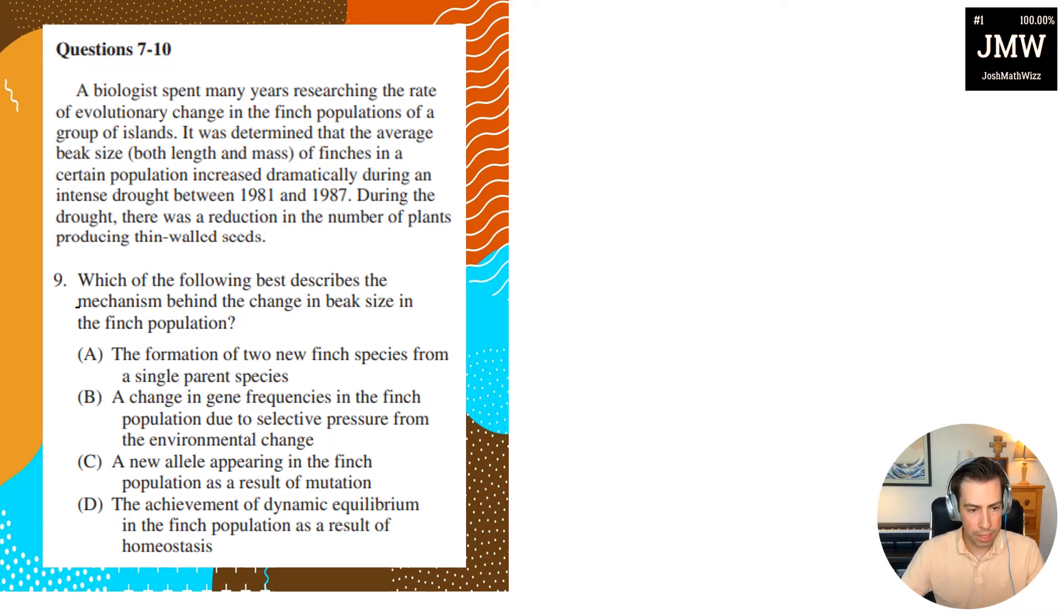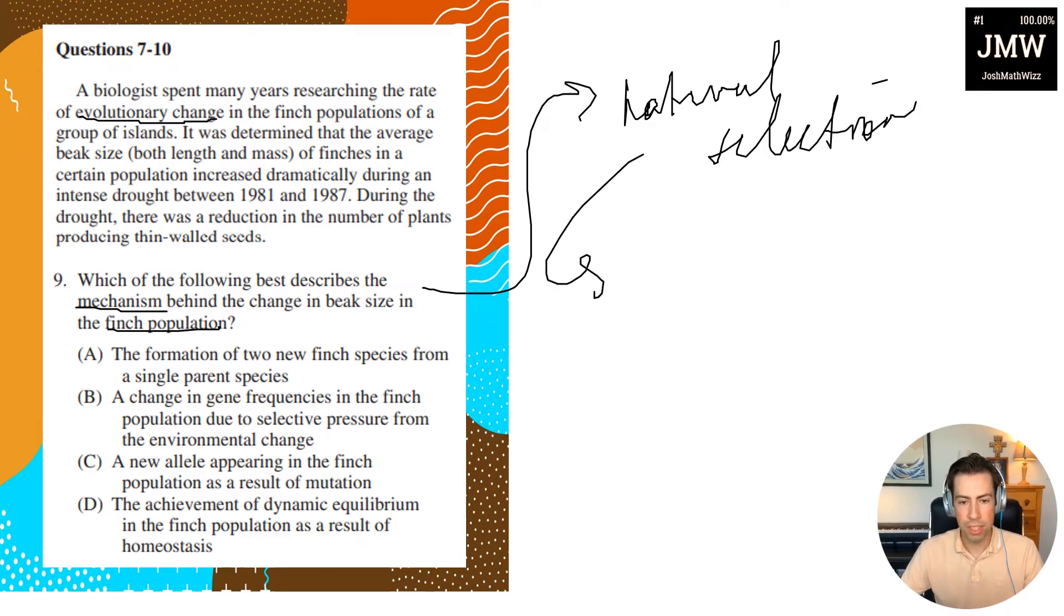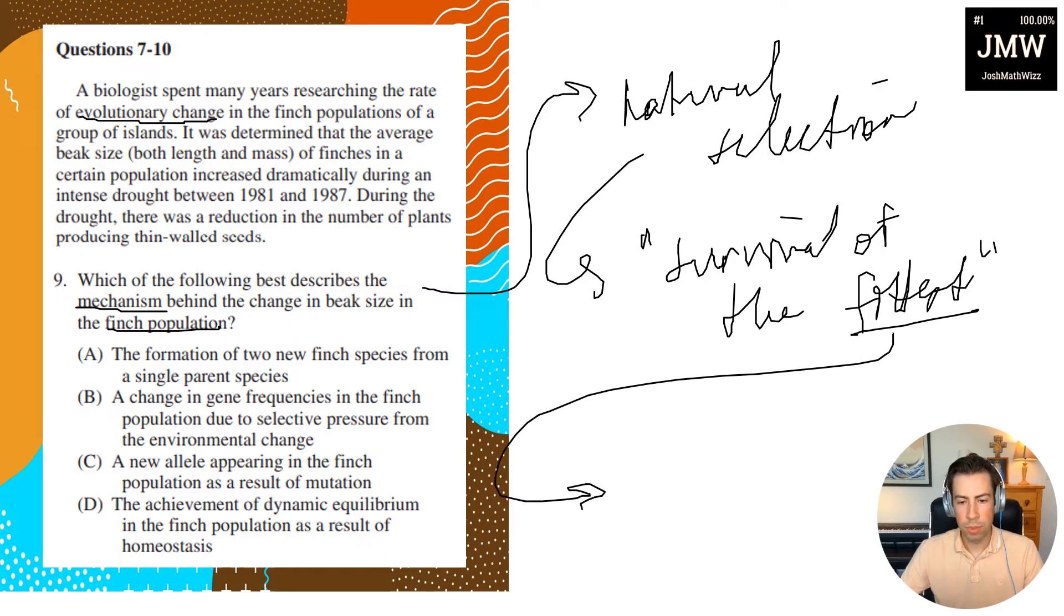Okay, which of the following best describes the mechanism behind the change in beak size of the finch population? So again, before you even look at the answer choices, let's just kind of talk about what this mechanism has to be. So again, they're trying to measure evolutionary change, right? So the mechanism has to be natural selection. And then we need to remember what is natural selection? Well, natural selection is just essentially survival of the fittest, right? And that's essentially, I want an answer choice that is something along those lines. And then again, the other key is that survival of the fittest, well, the fittest is going to be the result of genetic diversity. So there's genetic diversity among different individuals within the population which allows for there to be comparisons between fitness of those individuals.